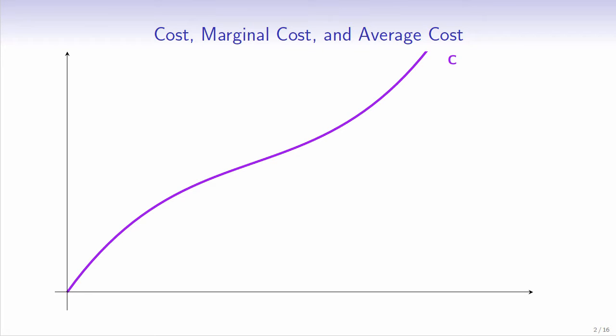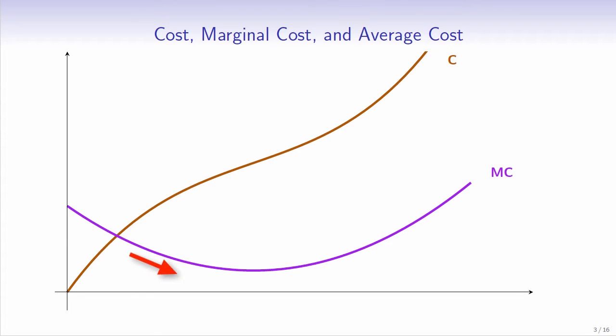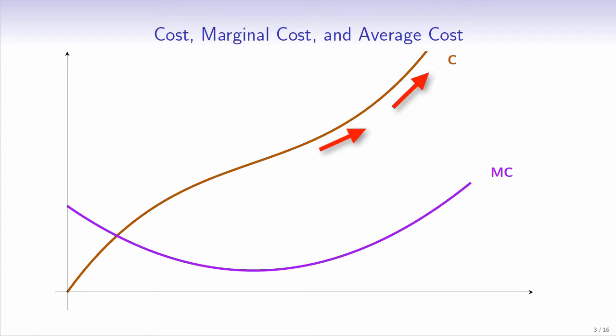Consider the cubic cost function in this graph. The horizontal axis measures the level of output. The cost function shows how the total cost rises as output is increased. This is the marginal cost. It declines as the cost function flattens towards its inflection point and then begins to increase as the cost function gets steeper.